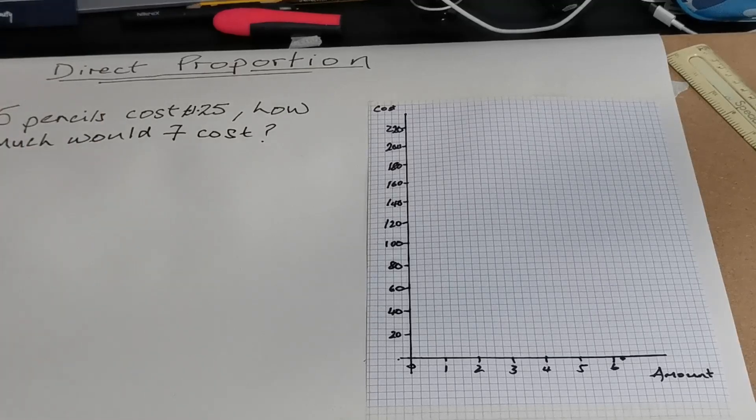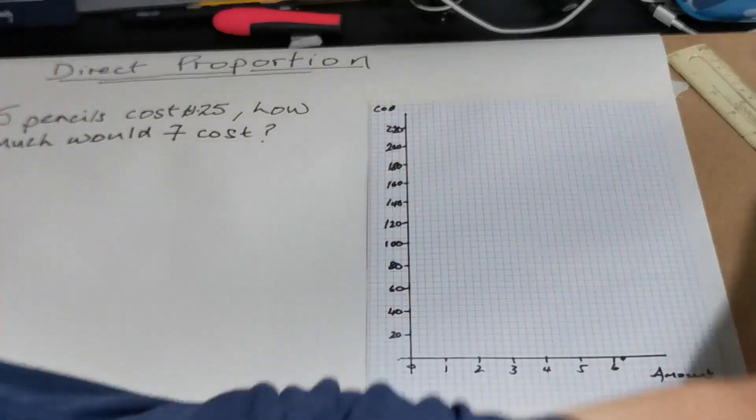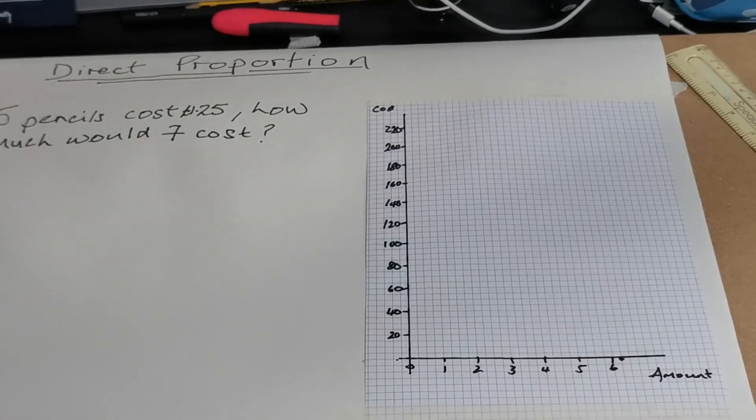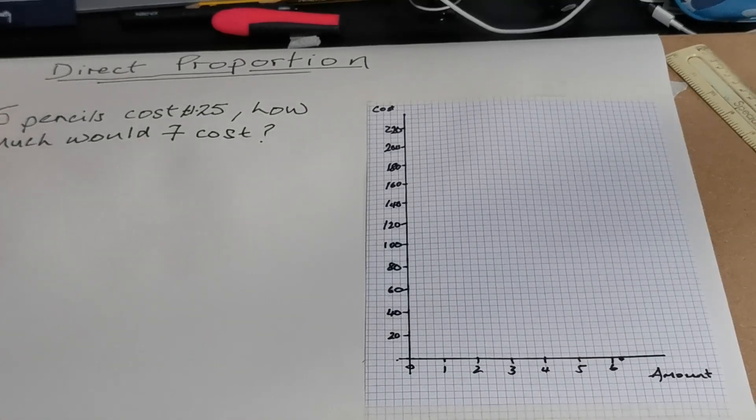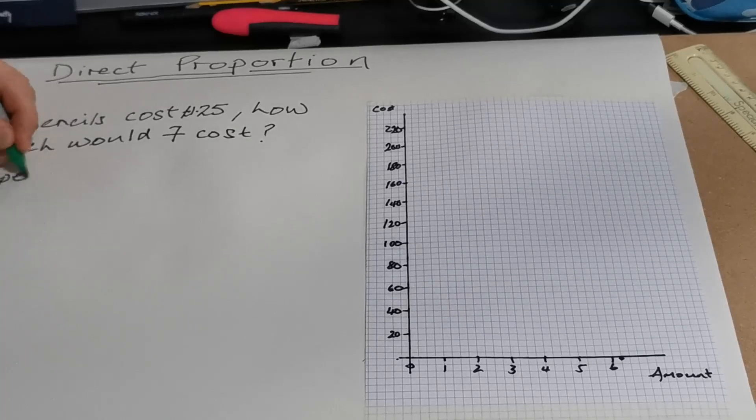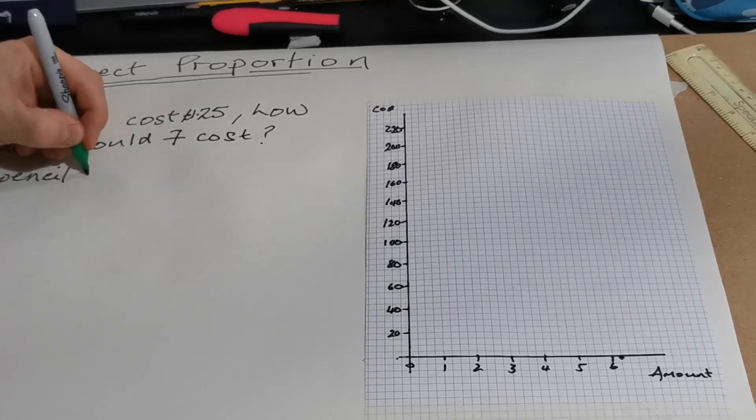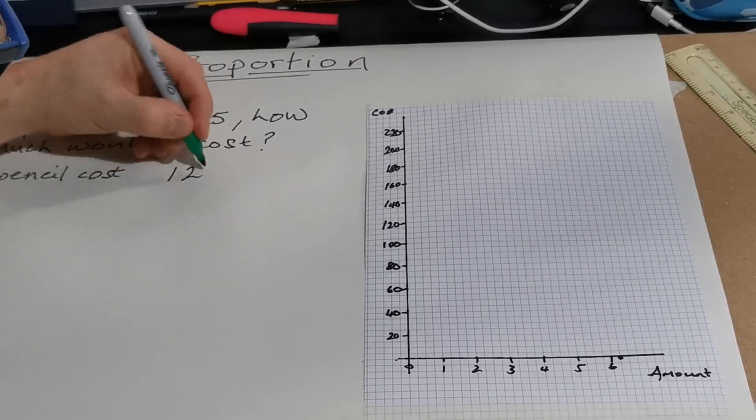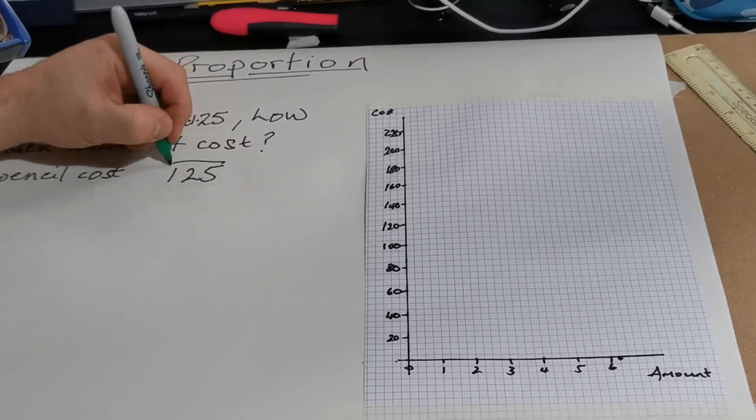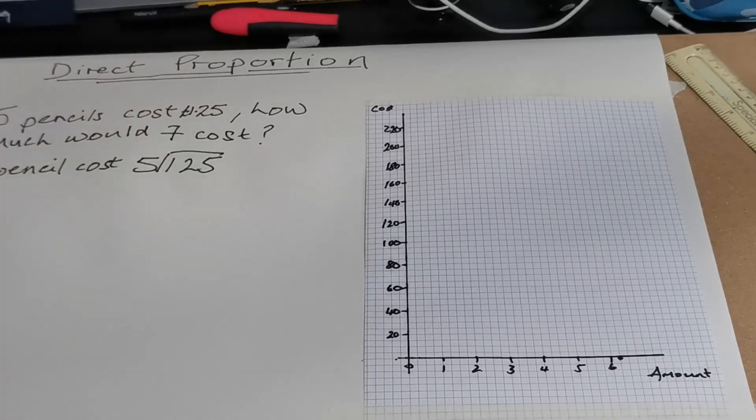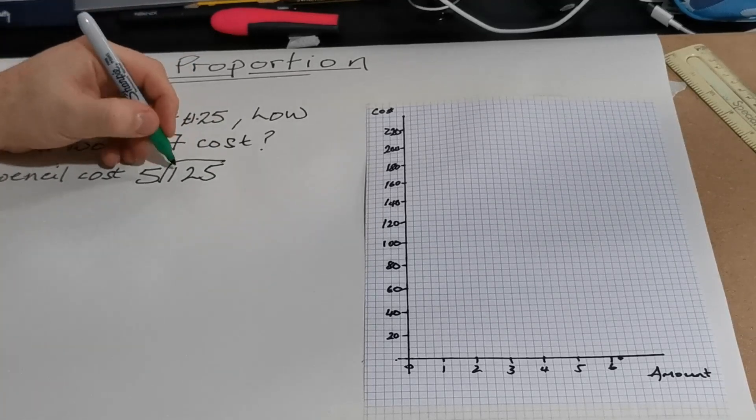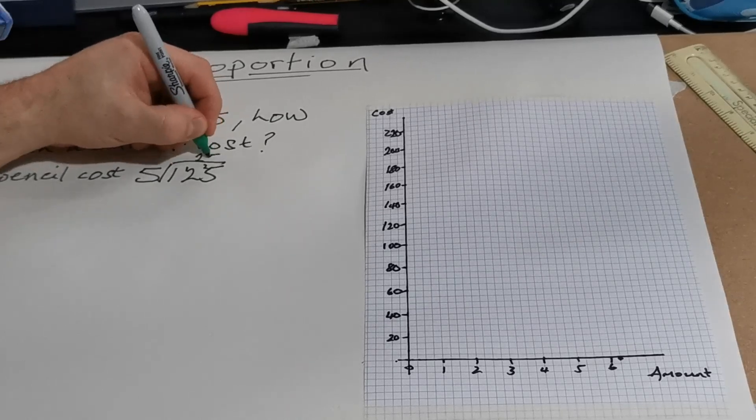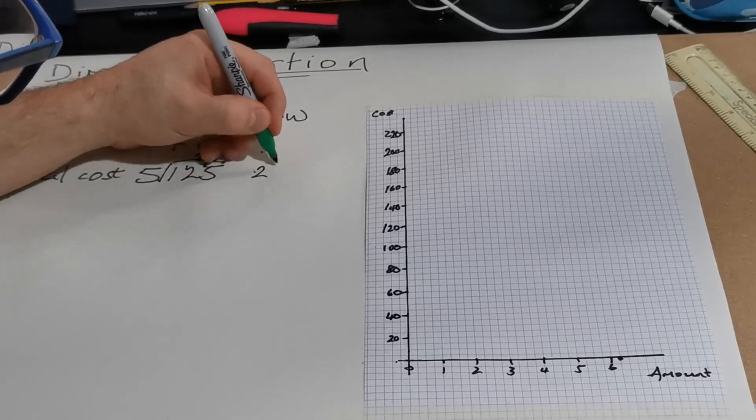I think most of you would instinctively know how to solve that quite well. But the real key to this whole type of problem is to find out how much one pencil costs. And you take that £1.25, I'm going to make it into pence. I'm going to divide that. So five goes into one no times, five goes into twelve twice, remains two. So that's 25p each.